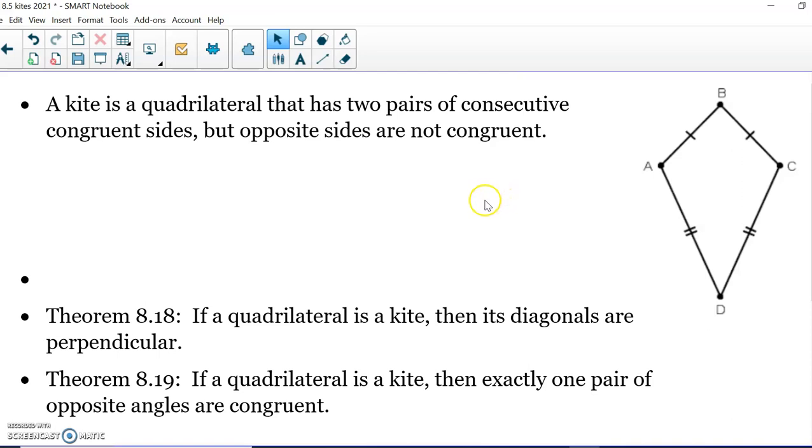A kite is a quadrilateral that has two pairs of consecutive congruent sides, but opposite sides are not congruent. So you can see these two sides are congruent, these two sides are congruent, but these two sides are not congruent, and opposite sides are not congruent. So sometimes you'll hear it written as two pairs of distinct consecutive congruent sides, therefore the top two can't be the same as the bottom two.